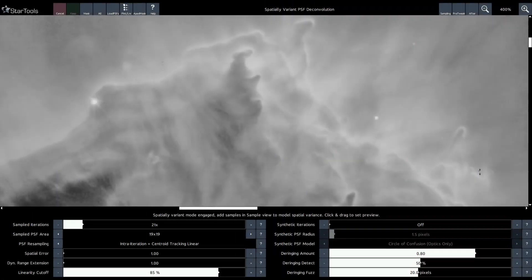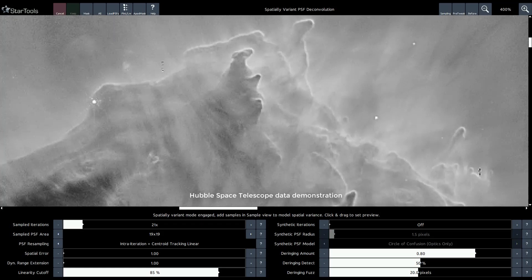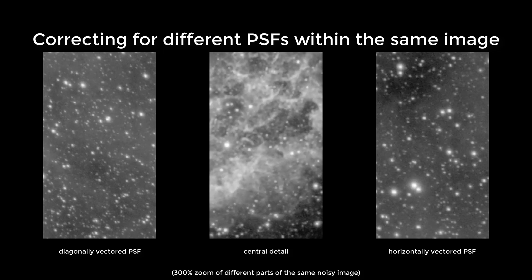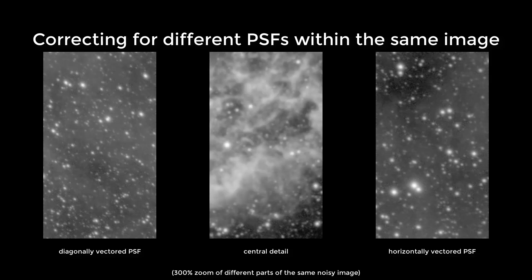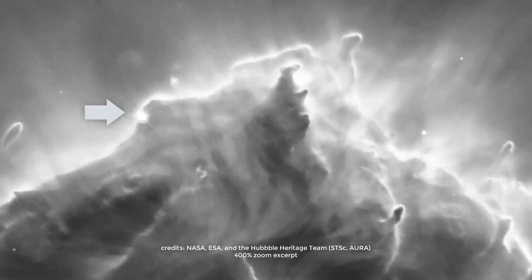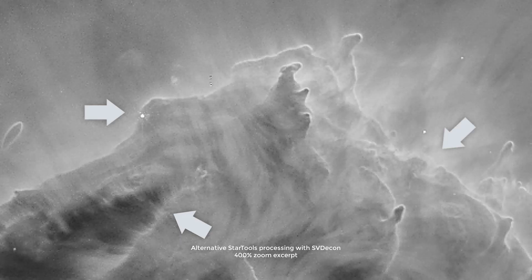The star of this eighth major release is a world-first implementation of a generalized spatially variant deconvolution module. In simple terms, the new module is able to recover more real detail from your datasets by taking into account how blur functions vary from pixel to pixel. This is in contrast to more basic implementations which only model a single blur function for the entire image. No matter whether you are an amateur astrophotographer with a DSLR or a space agency with a space telescope, StarTools' new SEDCON module brings meaningful improvements to your datasets beyond what was possible before.